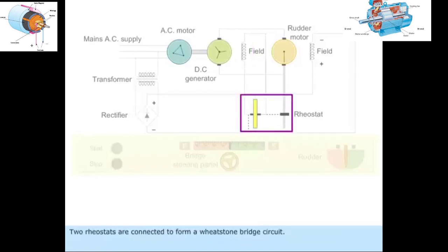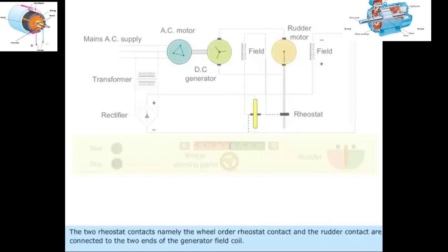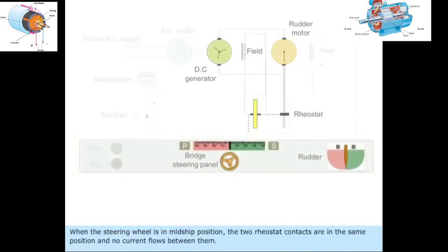Two rheostats are connected to form a Wheatstone bridge circuit. The two rheostat contacts, namely the wheel order rheostat contact and the rudder contact, are connected to the two ends of the generator field coil. When the steering wheel is in midship position, the two rheostat contacts are in the same position and no current flows between them. Now the steering wheel is turned to port side.